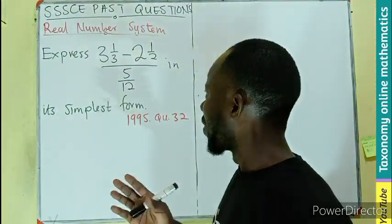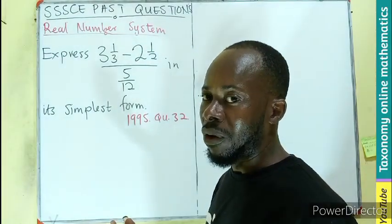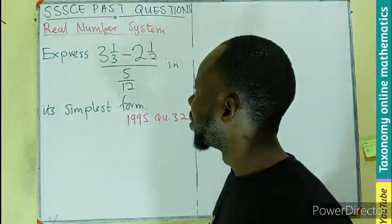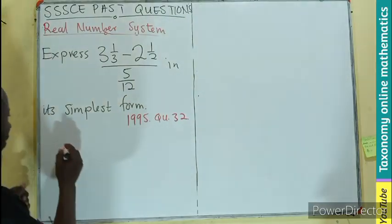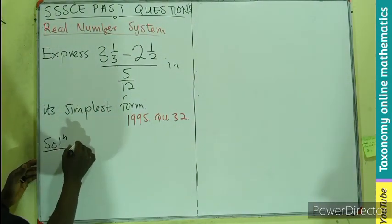So we are to write this in the simplest form, which means we have to solve by operations on fractions. First thing, let's repeat the question.